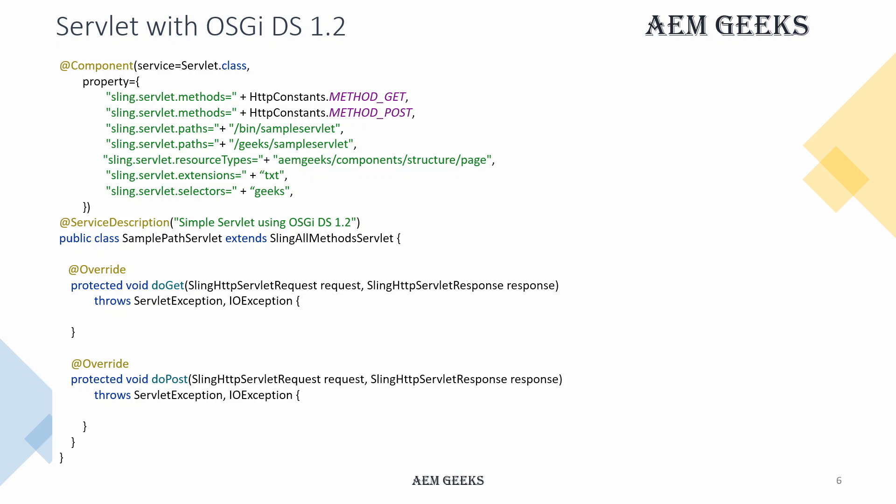Let's look at a basic pseudo code so you can understand how it looks. In declarative services 1.2, or R5, there is no servlet-specific annotation. You use the @Component annotation to write a servlet as well. Inside the @Component annotation, you first define the service, which is your servlet. Then inside the property, you define different properties that will be used to register your servlet. These properties are defined in the constants of SlingResolverConstants. You can use either the string form or the constants.